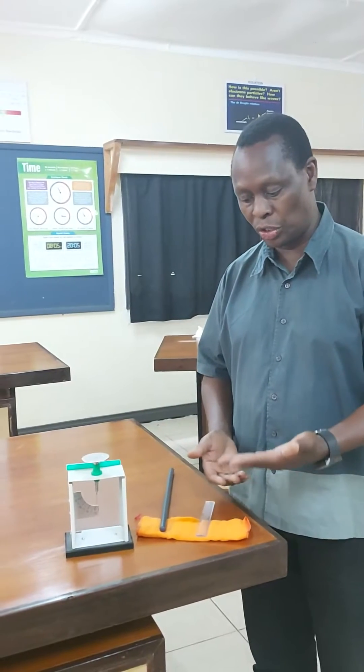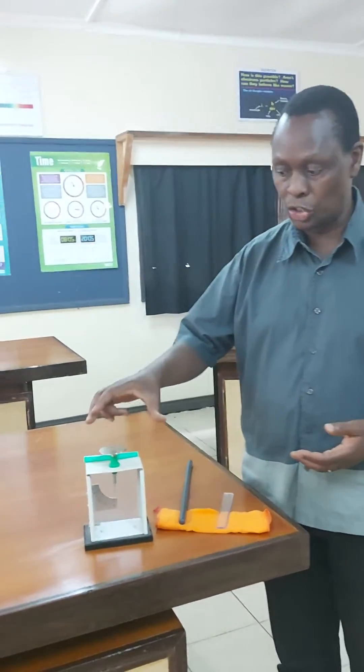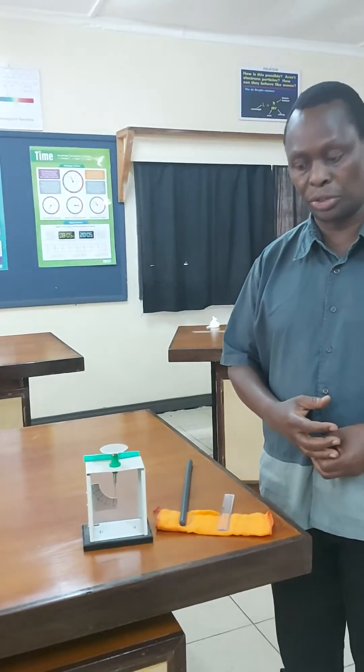We want to be able to generate static electricity and what we'll do is use a piece of clothing, an insulating plastic ruler there, an insulating rod there, and an instrument here which is used for detection of charge, the gold leaf electroscope.